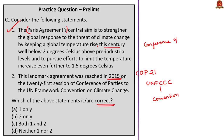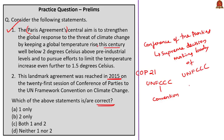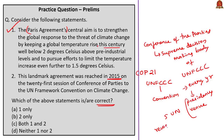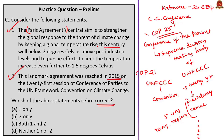The Conference of the Parties of UNFCCC is the supreme decision-making body of the convention. The COP meets every year, and the presidency rotates among five recognized UN regions: African region, Asian region, Latin America and the Caribbean, Central and Eastern Europe, and Western Europe and others. These sessions are also called international climate change conferences. The last session was held in Katowice, Poland in December. Both statements are correct — answer is option C: both one and two.